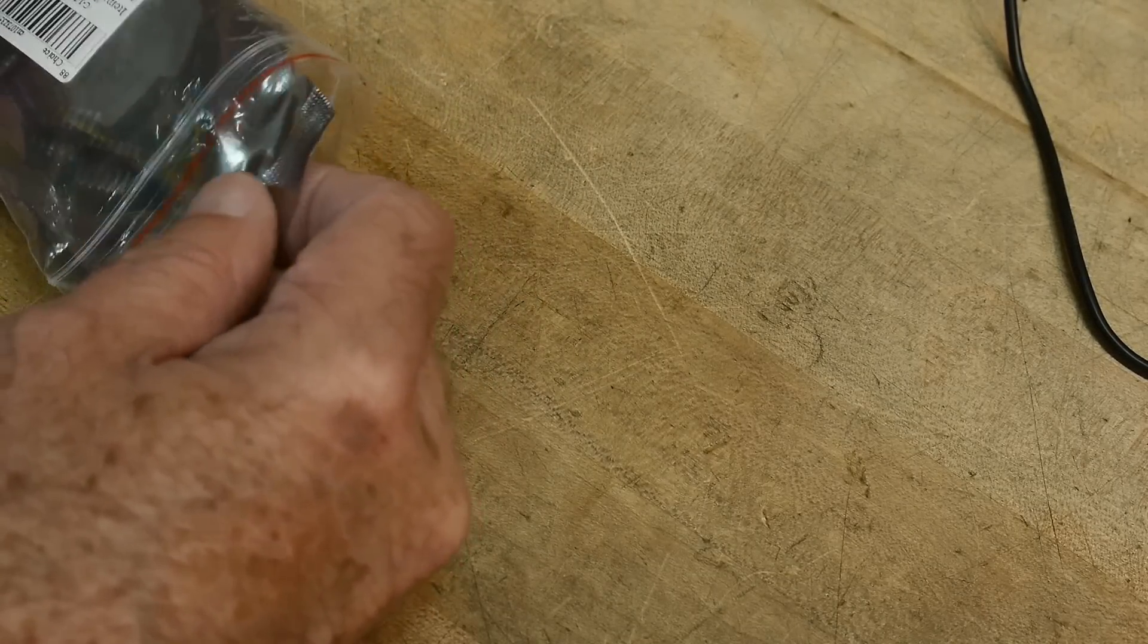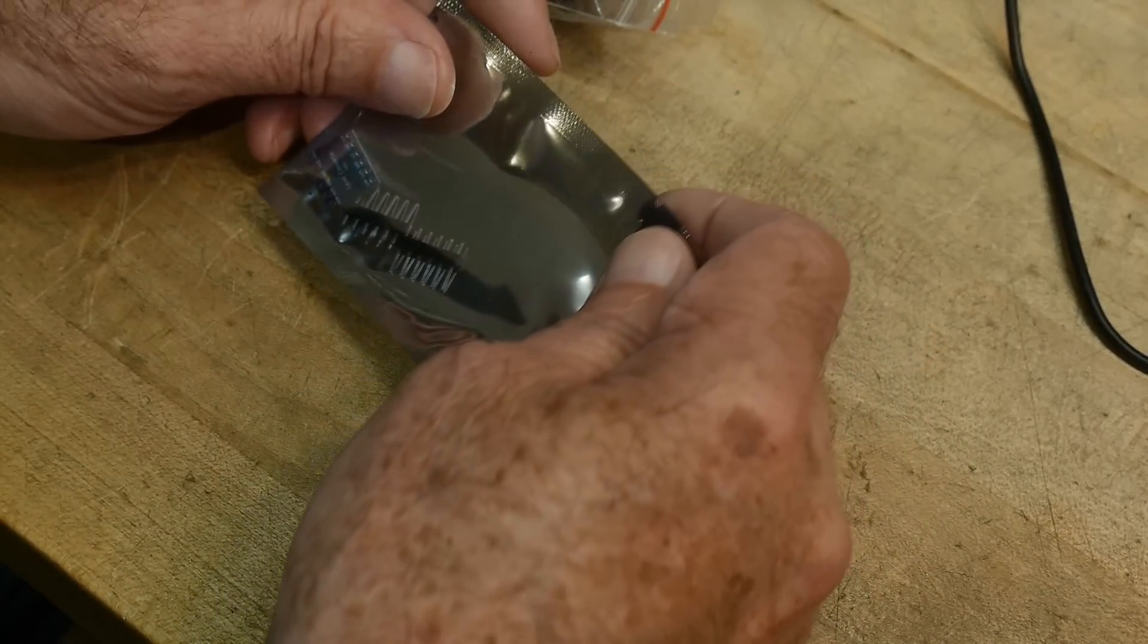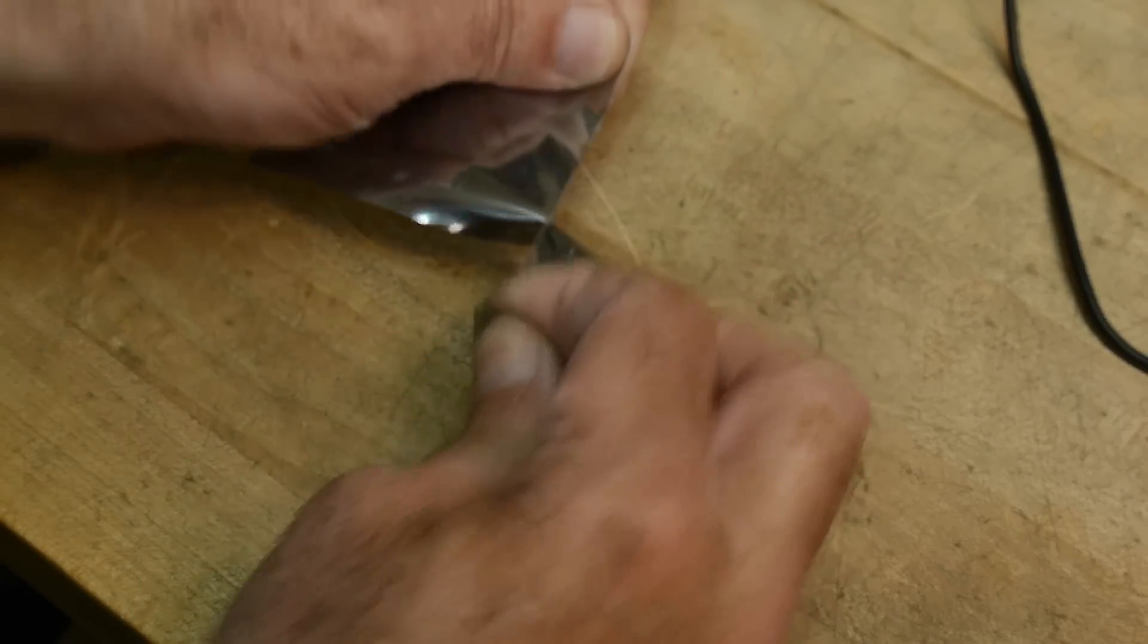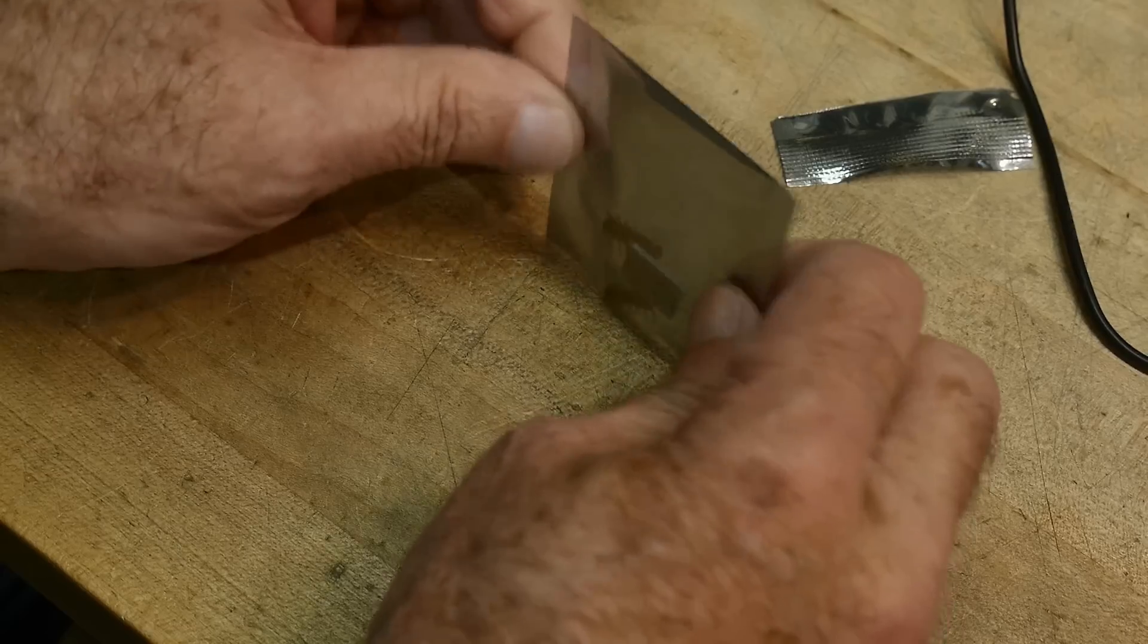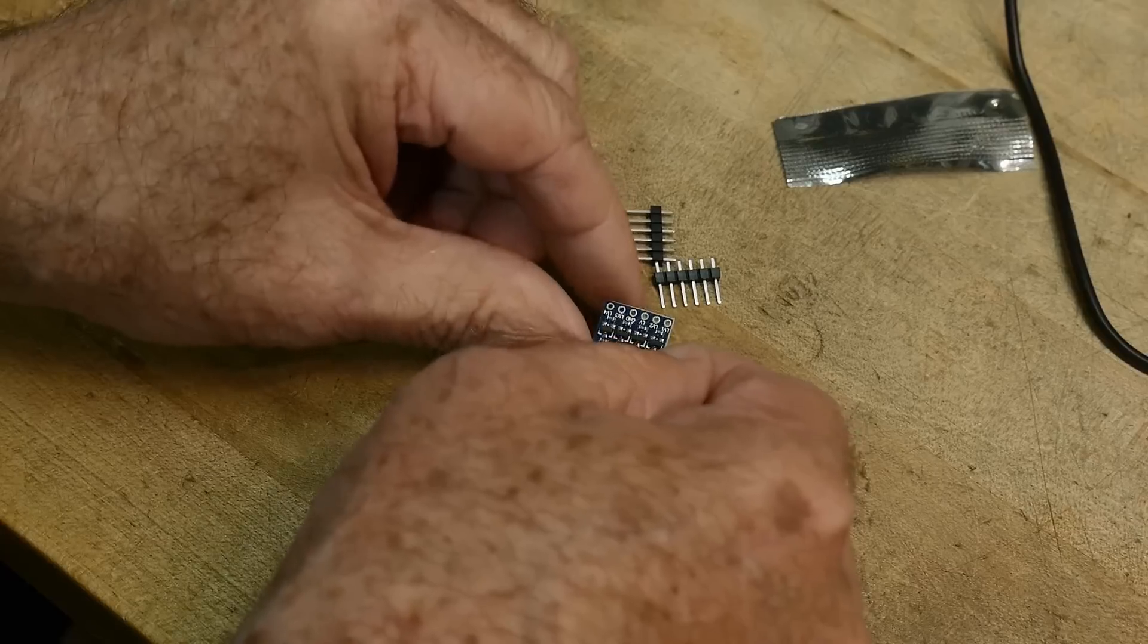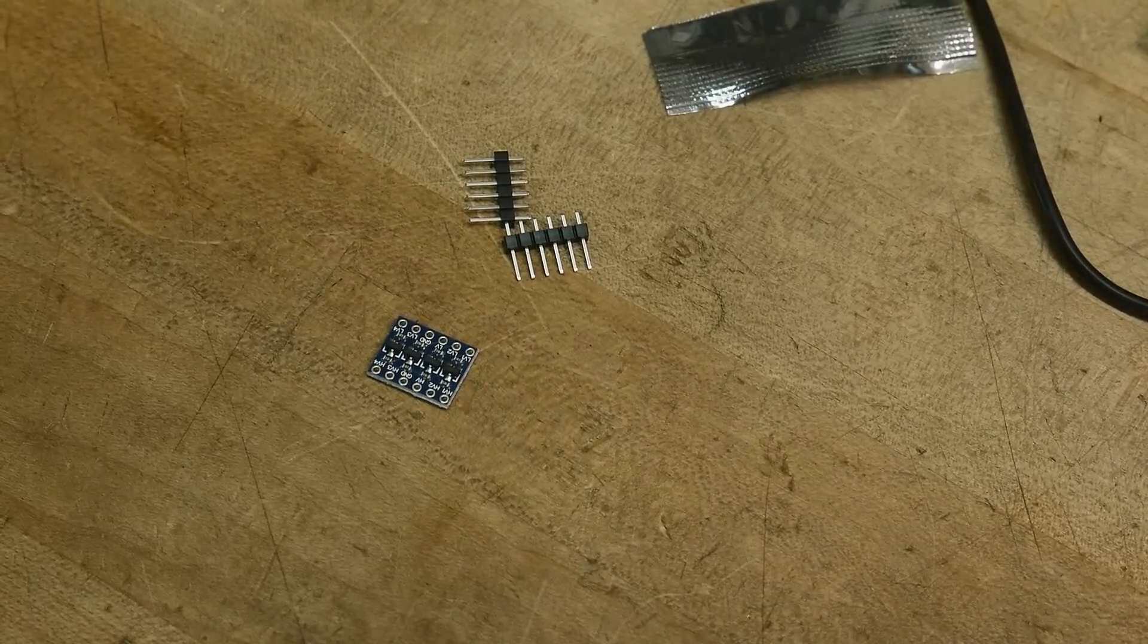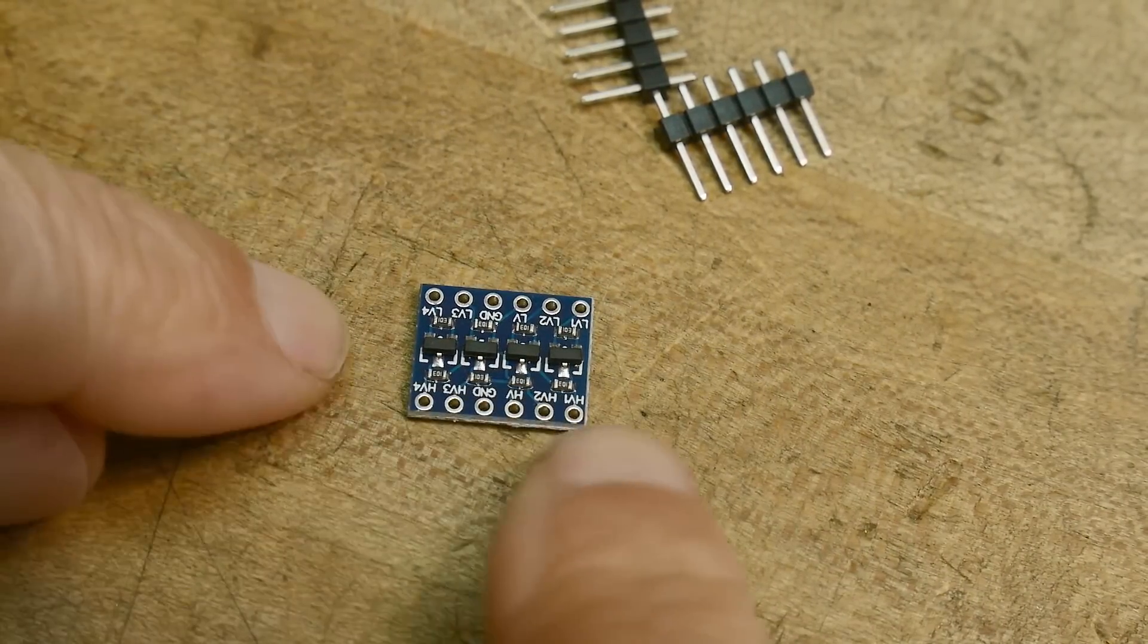Now, if you go online and you go to AliExpress, you can get these level converter boards for, oh gosh, they're like super cheap. I think you get five of them for like a buck and a half. They're like super cheap. So let's open up one here. You get a little board and you get a couple of headers. So this is like 20 cents really. And you get, you can't see that, it's too small. Let me come down. There we go.